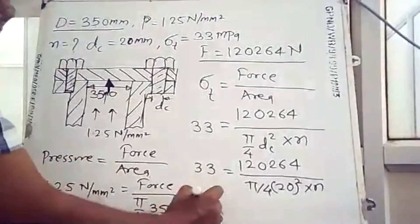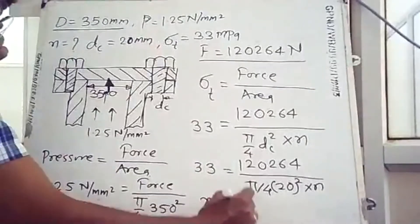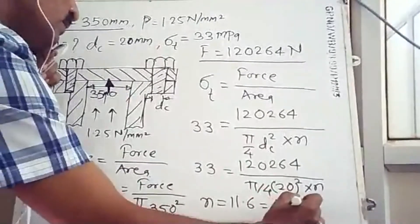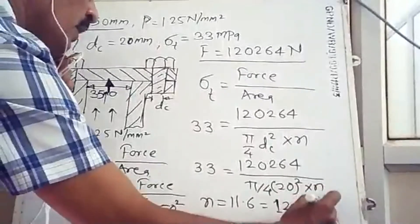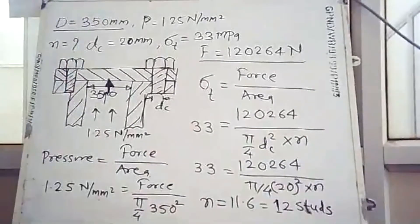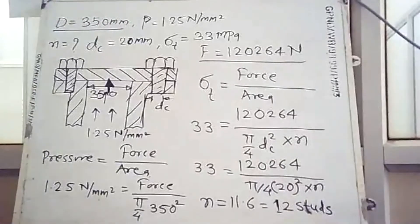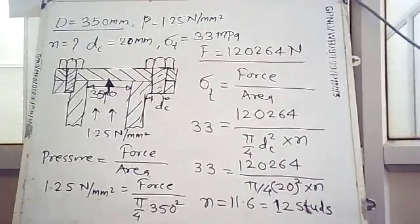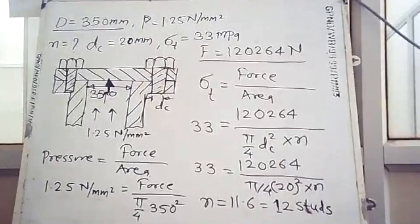From this equation we get the value of n equal to 11.6, so there should be at least 12 studs. There should be at least 12 studs mounted for a safe design. This completes the problem — we converted steam pressure into force, that force creates tensile stress, and from the tensile stress we found the number of studs required. This completes one more problem based on screw design.